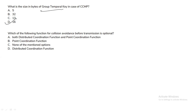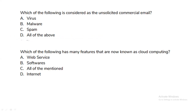Which function for collision avoidance before transmission is optional — Distributed Coordination Function or Point Coordination Function? The Point Coordination Function is optional for collision avoidance before transmission. Option B is the correct answer.